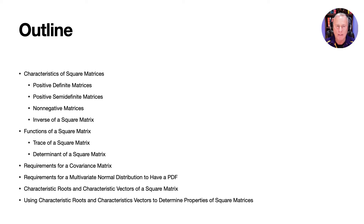We'll first look at several characteristics of square matrices. We'll define what it means for a square matrix to be positive definite, positive semi-definite, and non-negative. We'll also define the inverse of a square matrix and give conditions under which the inverse of a square matrix exists. We'll then look at two important functions of square matrices: the trace of a matrix and the determinant.